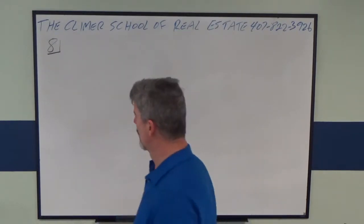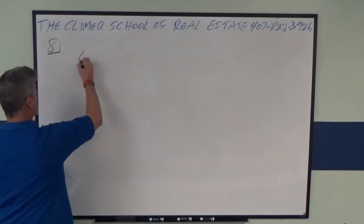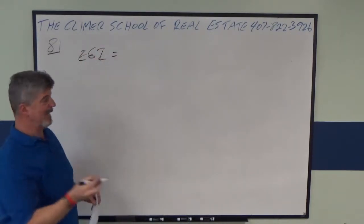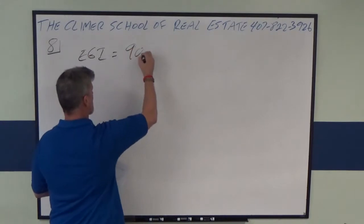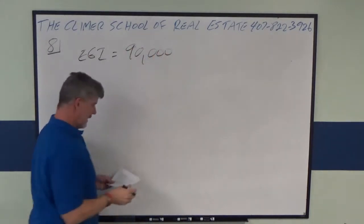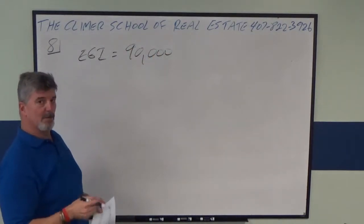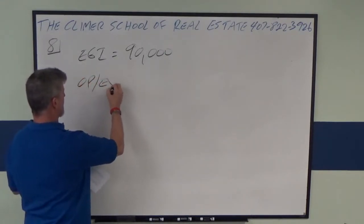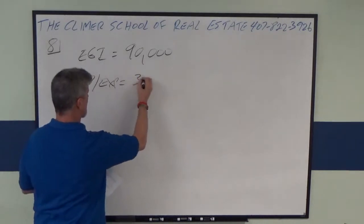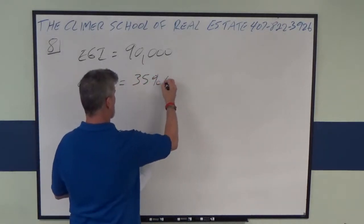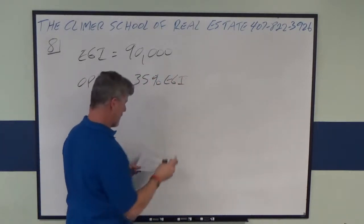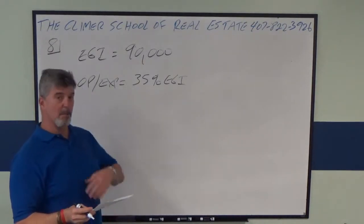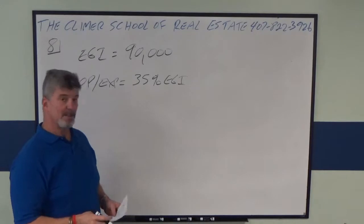All right, so what do we have here? Effective gross income is, according to the problem, $90,000. It looks like expenses are 35% of effective gross income. What else do we know? The appraiser says that the market area cap rate is 7%.